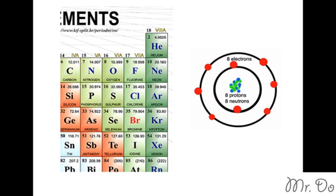from the octet rule, it wants to satisfy eight electrons on the outside, which is the second energy level. But it only has six. So there's two things that it can do. One, it can lose all six of the electrons on the outside, or it can gain two more electrons to make it a complete eight valence on the outside.